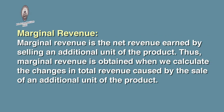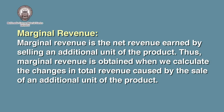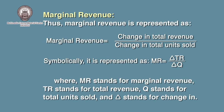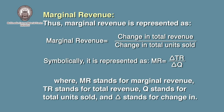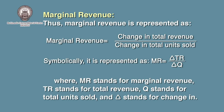Marginal revenue is the net revenue earned by selling an additional unit of the product. Thus, marginal revenue is obtained when we calculate the change in total revenue caused by the sale of an additional unit of the product. Marginal revenue is represented as MR = ΔTR / ΔQ, where MR stands for marginal revenue, TR stands for total revenue, Q stands for total units sold, and delta (Δ) stands for change in.